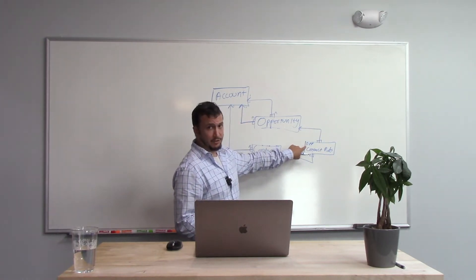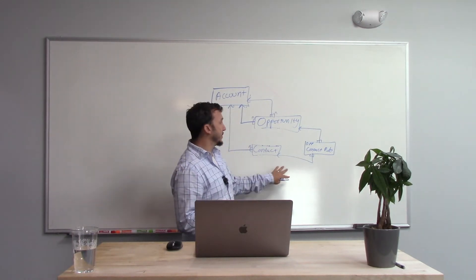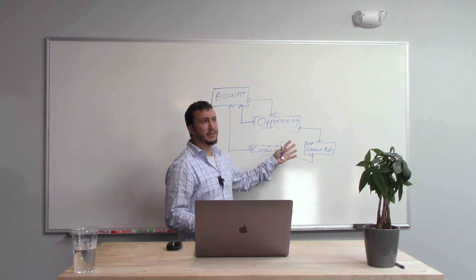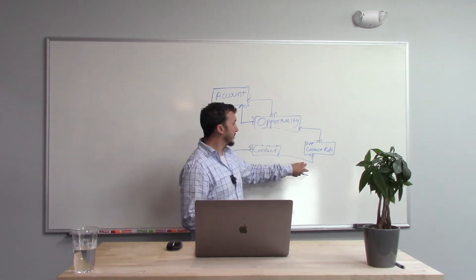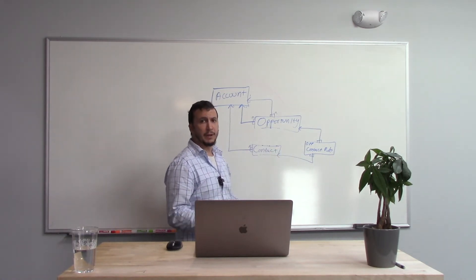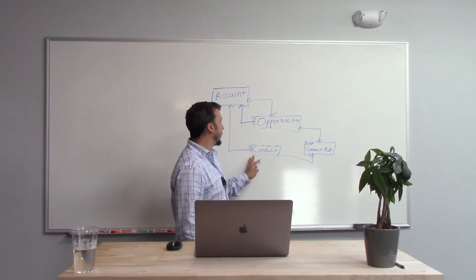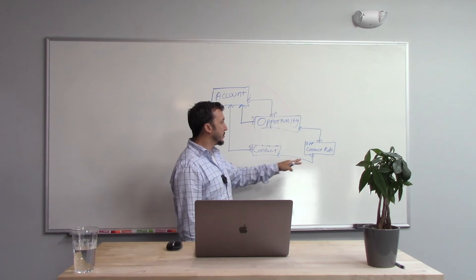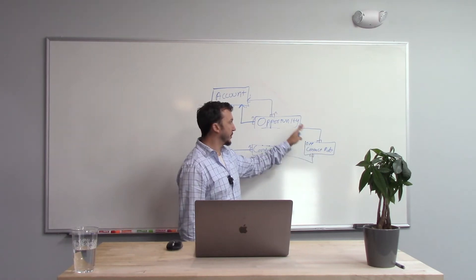Remember, this third object — the junction object — always has two lookup values. Very often these are going to be master detail relationships, not just normal lookups. Although two lookups technically makes a junction and creates a many-to-many relationship, usually we think of a junction object as really requiring the parent. As a reminder, in master detail relationships the child cannot exist without the parent, and that's usually true on junction objects. We don't have Opportunity Contact Roles without both opportunities and contacts — you need both parents for this to make any sense.